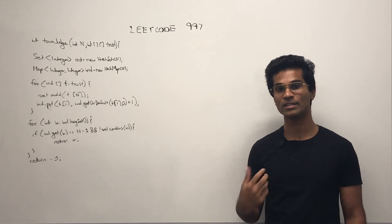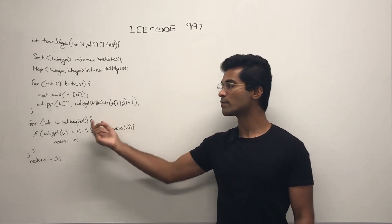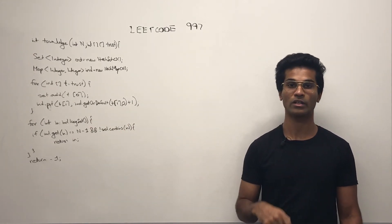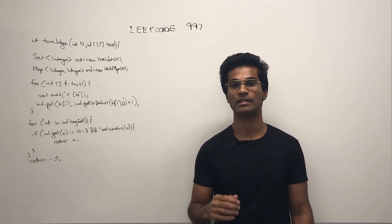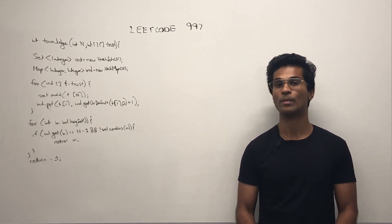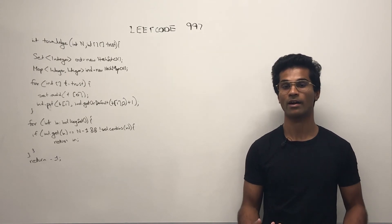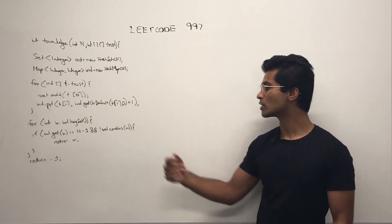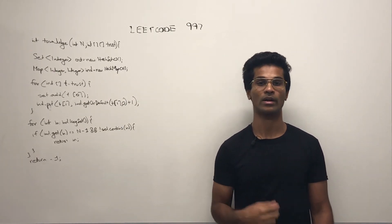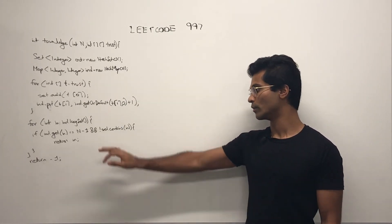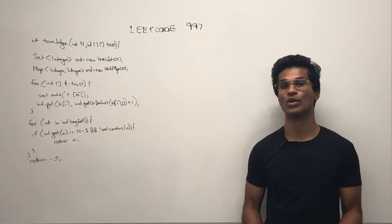Once we're done with that, we simply go through the in degree, and if the value for that corresponding node, meaning the in degree for that corresponding node, is n minus 1, then we might have potentially found our judge. And then all we have to do is check that that particular node has no outgoing edges. If so, we return, otherwise we return negative.